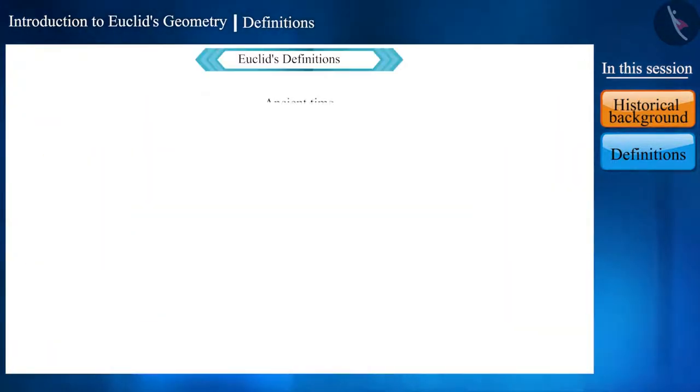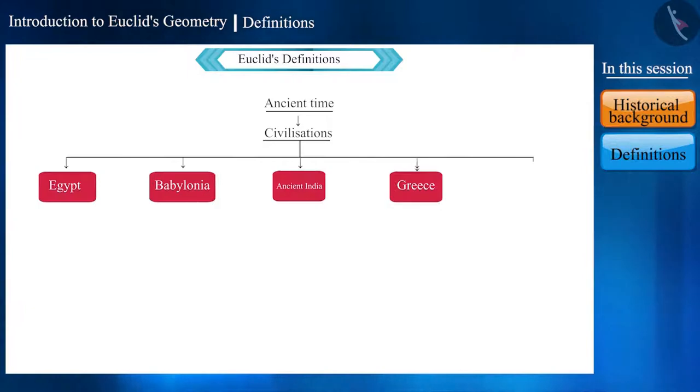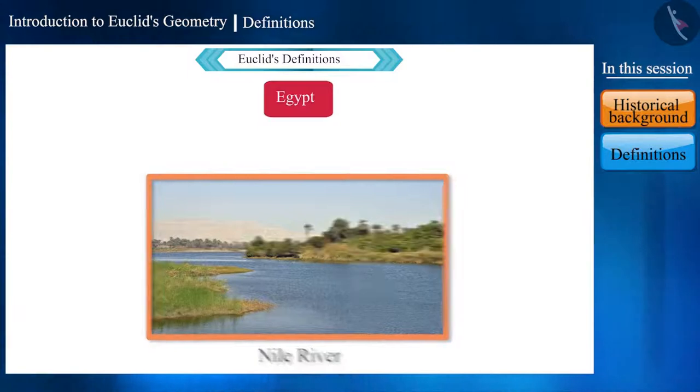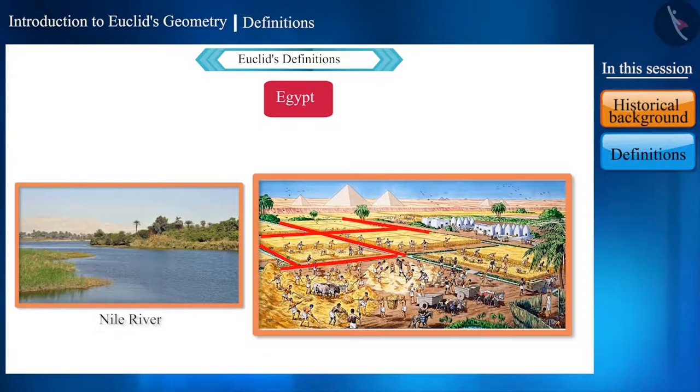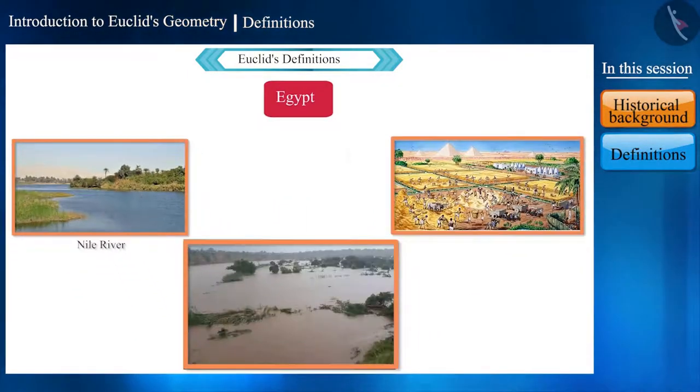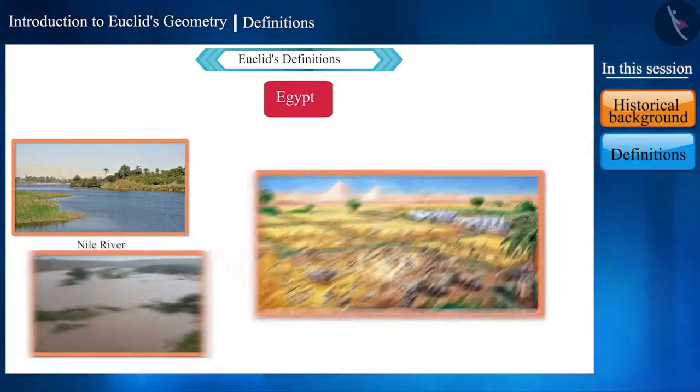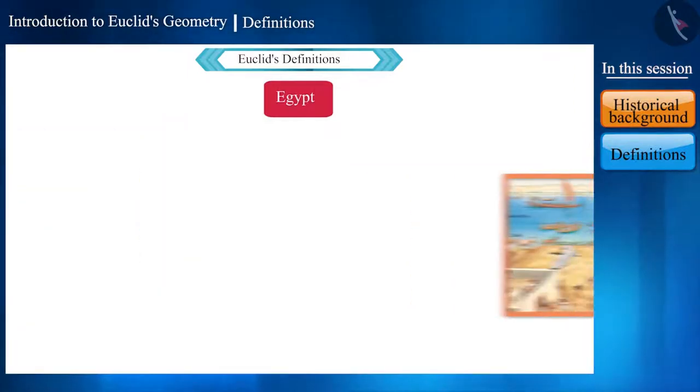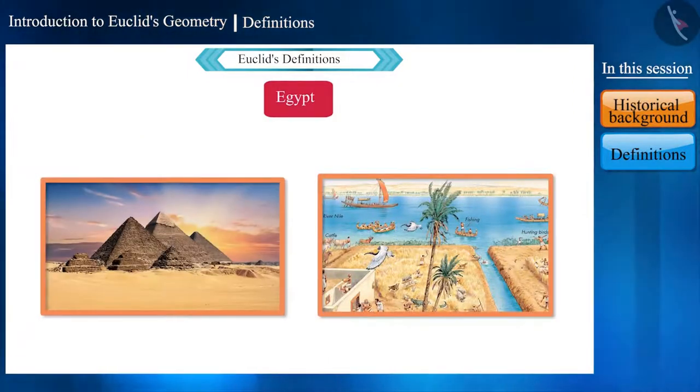For the Egyptians, every time the Nile River would get flooded, it would destroy the boundaries of their fields. They faced many difficulties to rebuild those boundaries. The same way, Egyptians developed many geometrical techniques and rules to solve these problems.